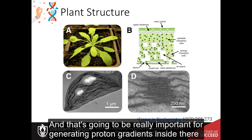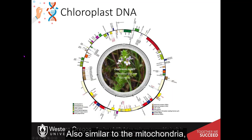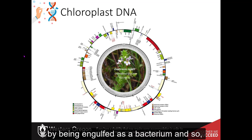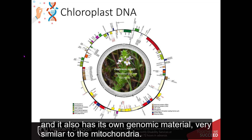So internal space inside each of these thylakoids that's stacked on top of each other is called the lumen of the thylakoid. And that's going to be really important for generating proton gradients inside there to drive the production of ATP. Also similar to the mitochondria, it's thought that the chloroplast also originated in eukaryotic cells by being engulfed as a bacterium. And so we think this, again, because it has that double membrane. And it also has its own genomic material, very similar to the mitochondria.